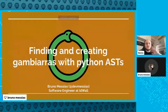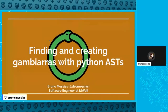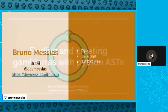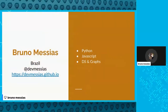My name is Bruno Messiahs and everyone is calling me Messiahs. Today I will talk about how we can use Python ASTs to find and create gambiarras. I work as a software engineer at IDWall and most of the time I work with Python, JavaScript, Data Science, and Graphs. Because of that I need to deal with different projects, with different code style guides and different persons from different backgrounds.